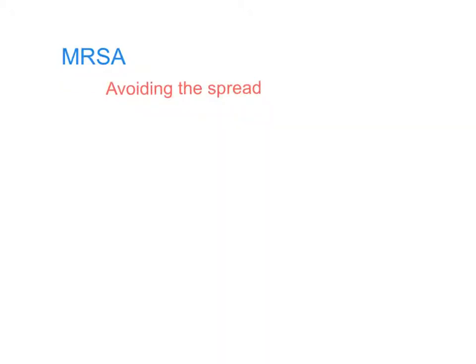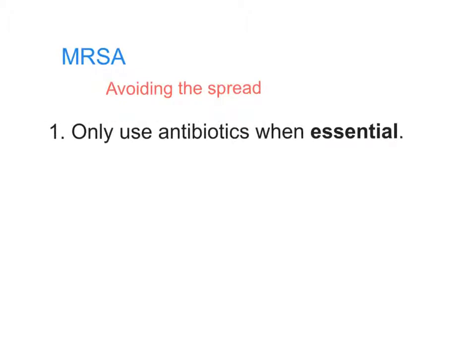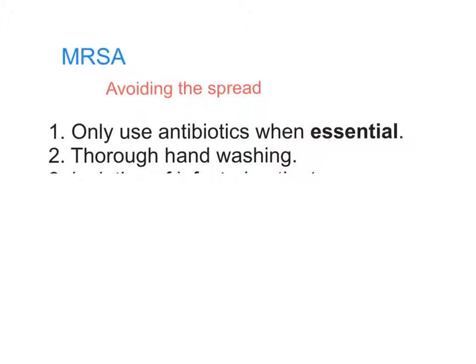So what can we do to avoid the spread of MRSA in hospitals? There are five key steps to remember. Firstly, we only use antibiotics when absolutely essential. The more antibiotics we use, the more resistant bacteria we develop. So when someone goes to the doctor complaining of a cough, a cold, or an ear infection, unless it's a really severe infection, doctors really shouldn't be prescribing antibiotics — we don't want to encourage resistance in the bacteria.